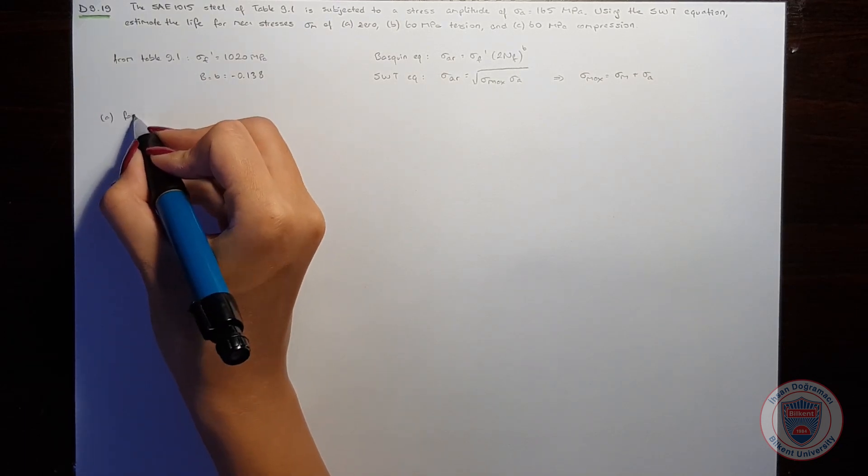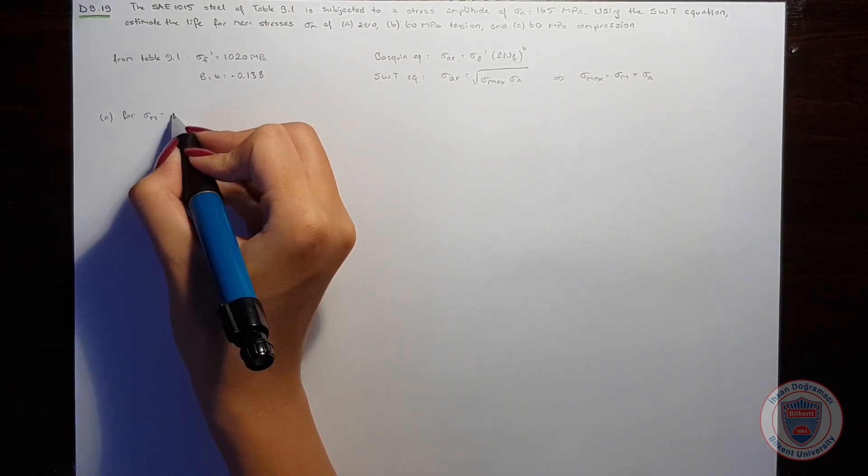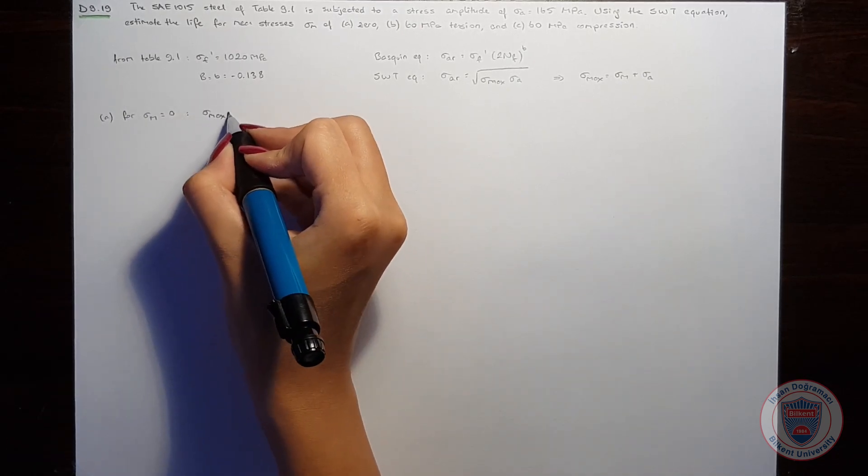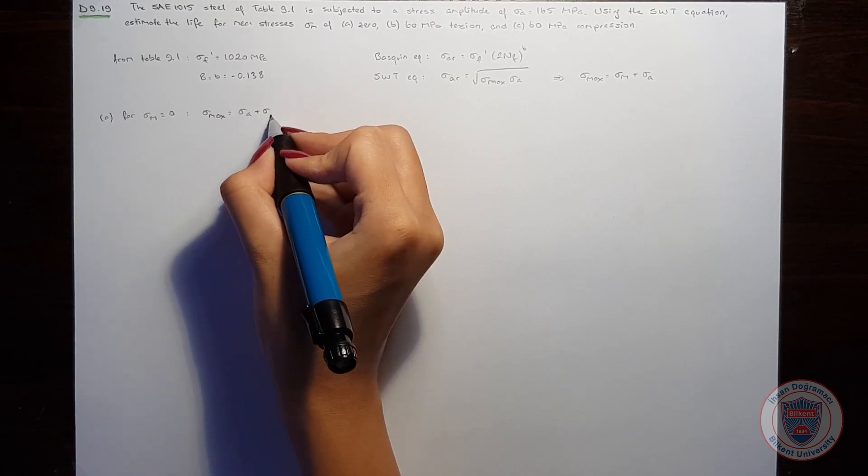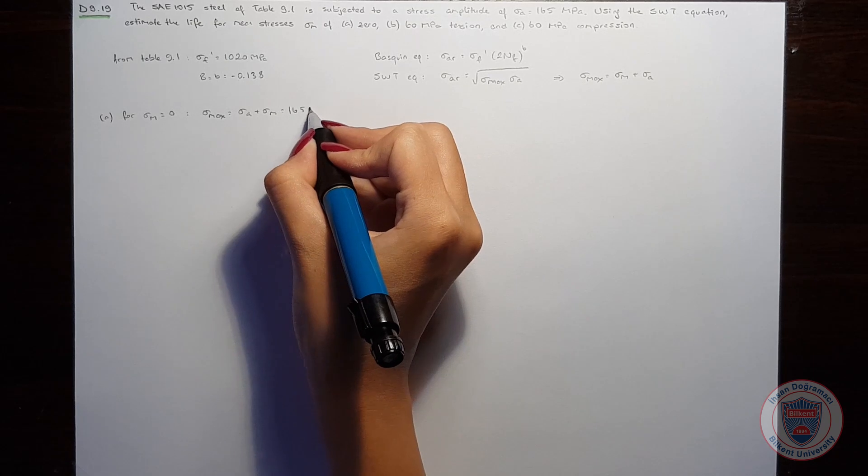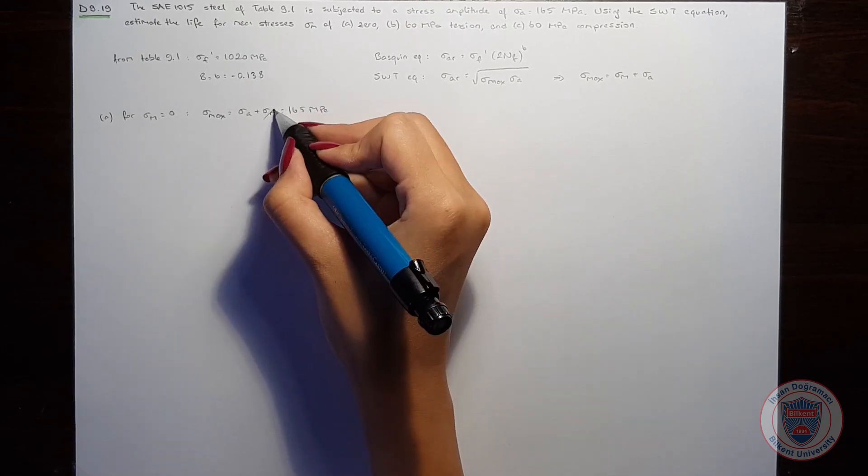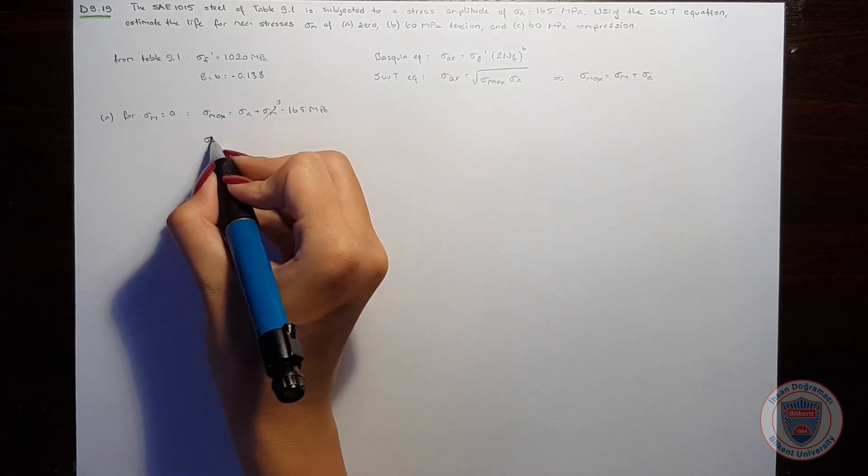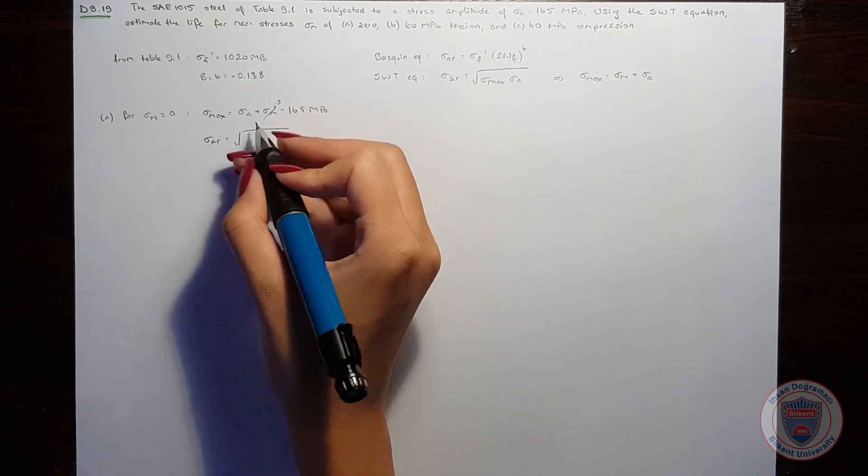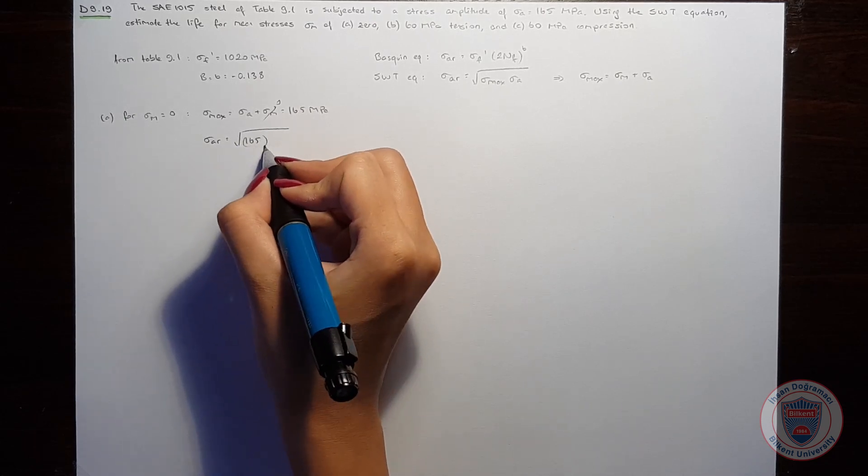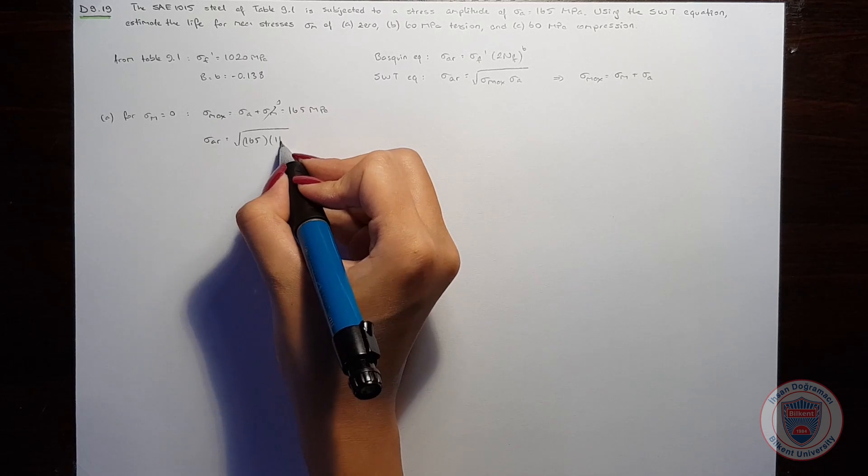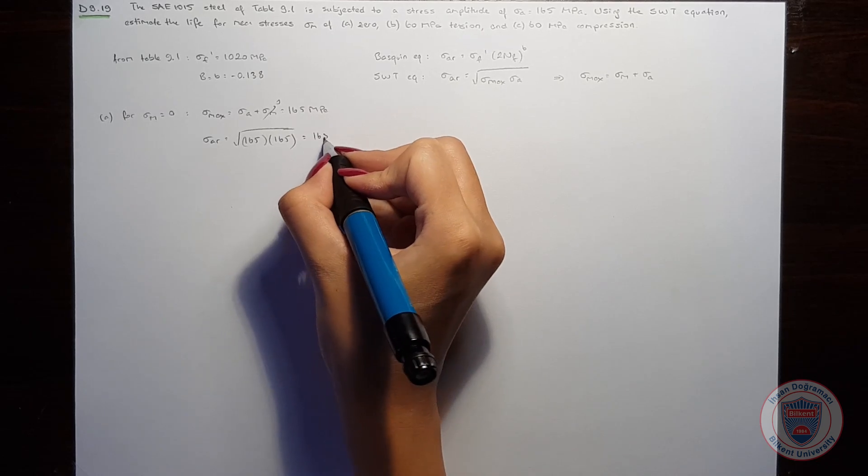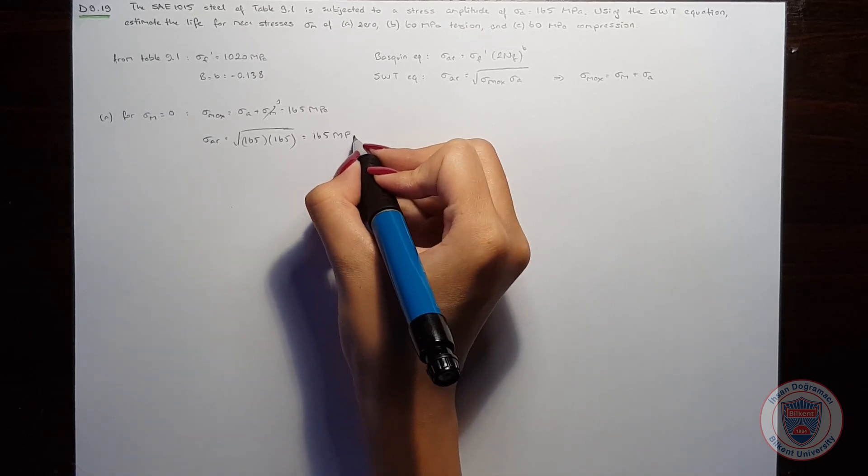In part A for mean stress is equal to 0, sigma max will be equal to 165 MPa because the sigma M is 0. So sigma AR will be equal to sigma max times the stress amplitude which is the same value. And sigma AR will also be 165 MPa.